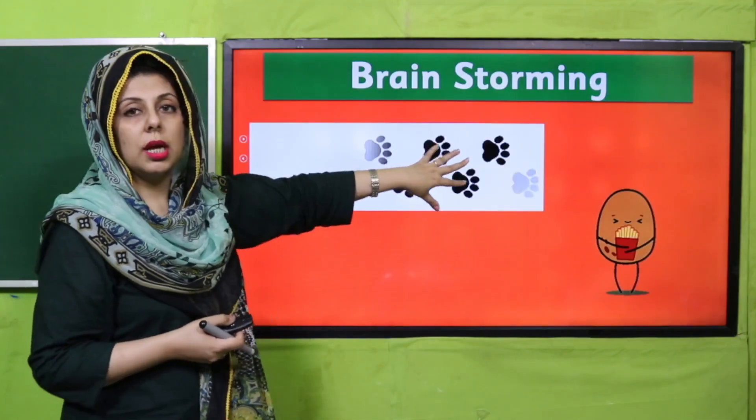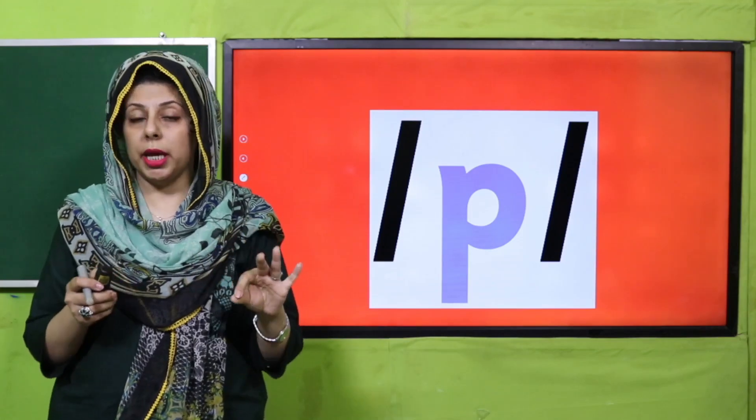Taake jab bachon se aap wo vocabulary discuss karein aur unki vocabulary build karein, toh kisi galat accent ya sound ke saath na ho. Bachon, yeh jo tasviren jo aapko nazar aayi thin — paws aur potato — isi sound se shuru hoti hain. Jaise ke P — parrot, P — pigeon, P — aapki book ka P page. Jab aap sochne lag jaenge toh kitne saare words mil jaenge.